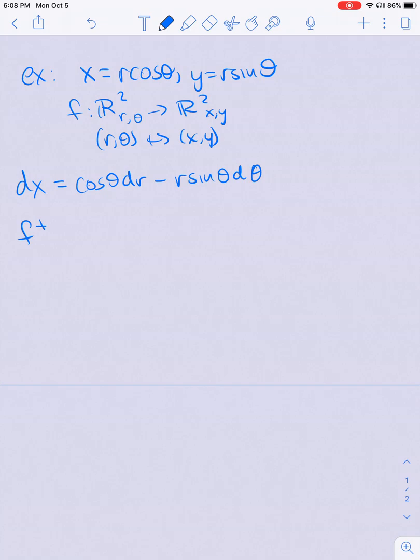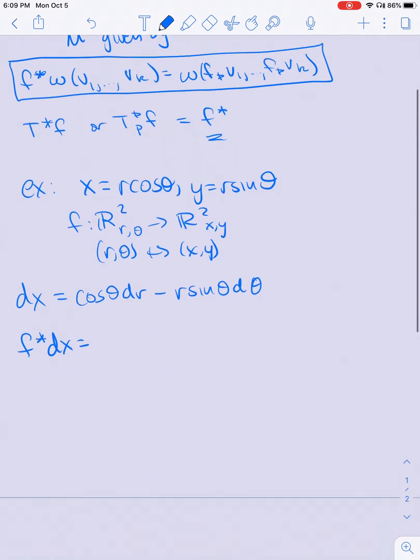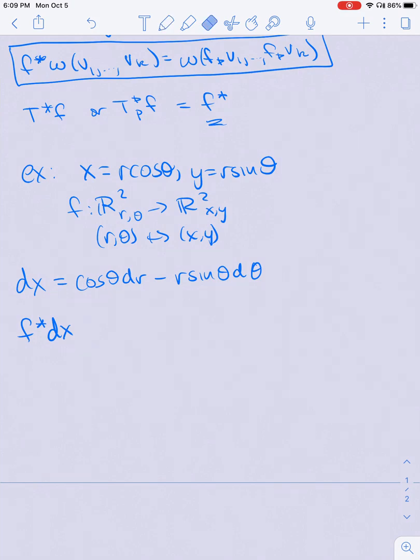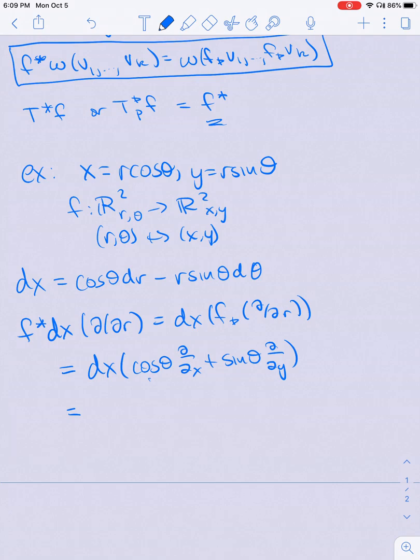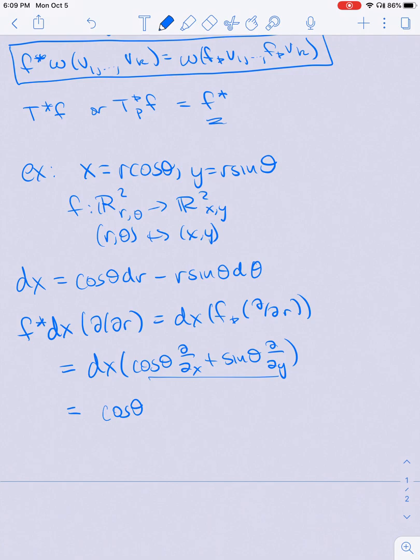Using my definition of pullback, f pullback dx is equal to some function of r and theta times dr plus some function of r and theta times d theta. The way to figure out what it is is to plug in d by dr and d by d theta and then see what those coefficients are. So f pullback dx equals dx of f push forward d by dr.